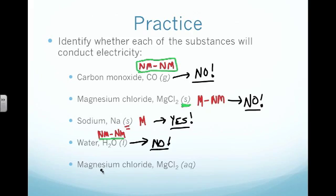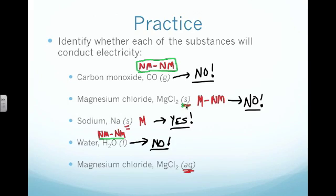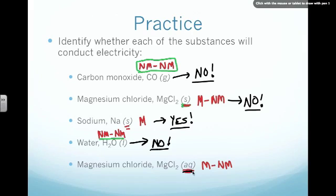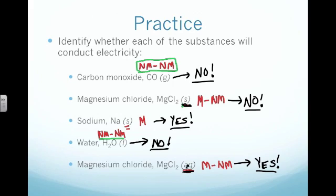Now we see magnesium chloride again. This time we see something a little different — it's labeled AQ instead of being a solid. Remember, magnesium was a metal and chlorine was a nonmetal, so we have a metal with a nonmetal — a metal is involved. We can confirm that it will conduct electricity by seeing that it's aqueous. Aqueous means that it's dissolved in water. So this one will actually conduct electricity, unlike the solid version above — the solid will not, but the aqueous solution will.